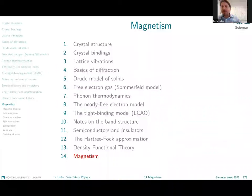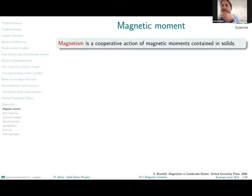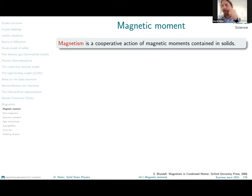Today we will talk about magnetism. We can start by realizing what magnetism is. How would you describe it if you should answer the question: what is magnetism? You basically say that magnetism is a cooperative behavior of magnetic moments contained in the solid. We will try to make the term 'magnetic moment' a little more precise today.